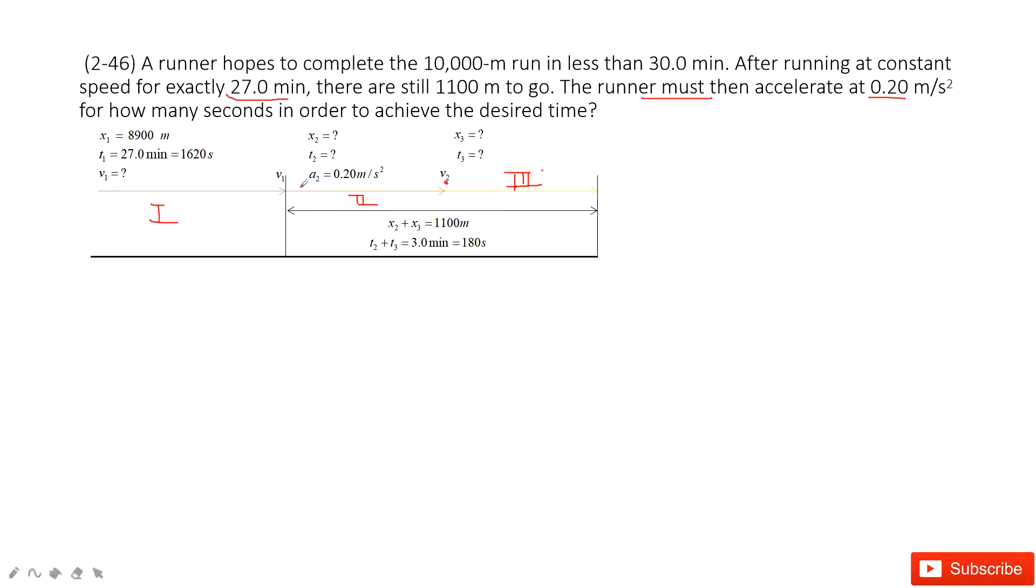So from this picture, it becomes clear. There is a runner who moves at constant velocity v1 for the first 8,900 meters in 1,620 seconds for part 1. Then he or she speeds up with acceleration 0.2 meter per second squared for time t2 and moves x2.